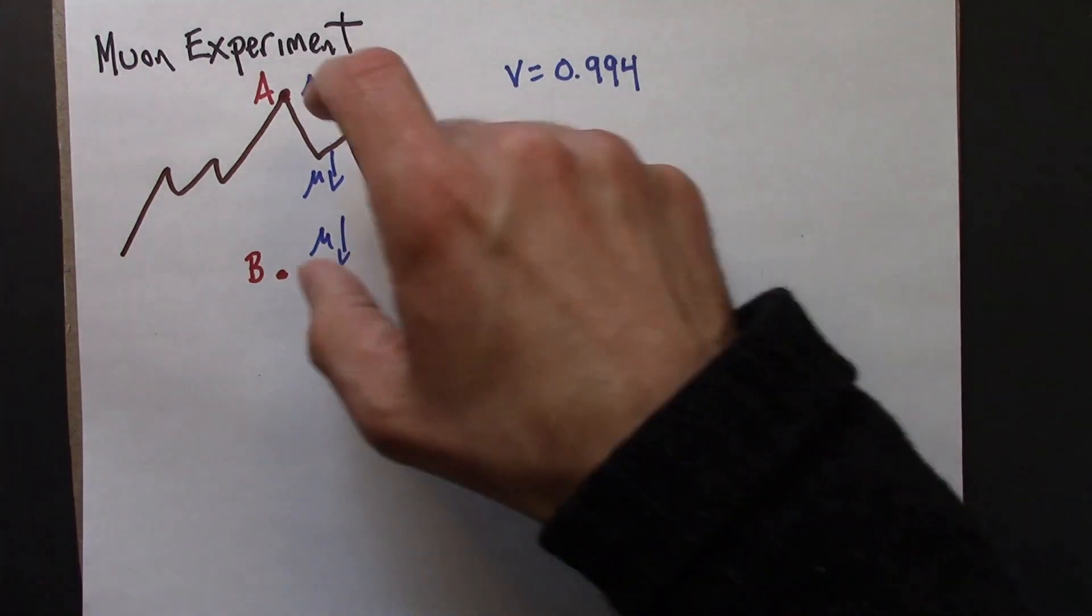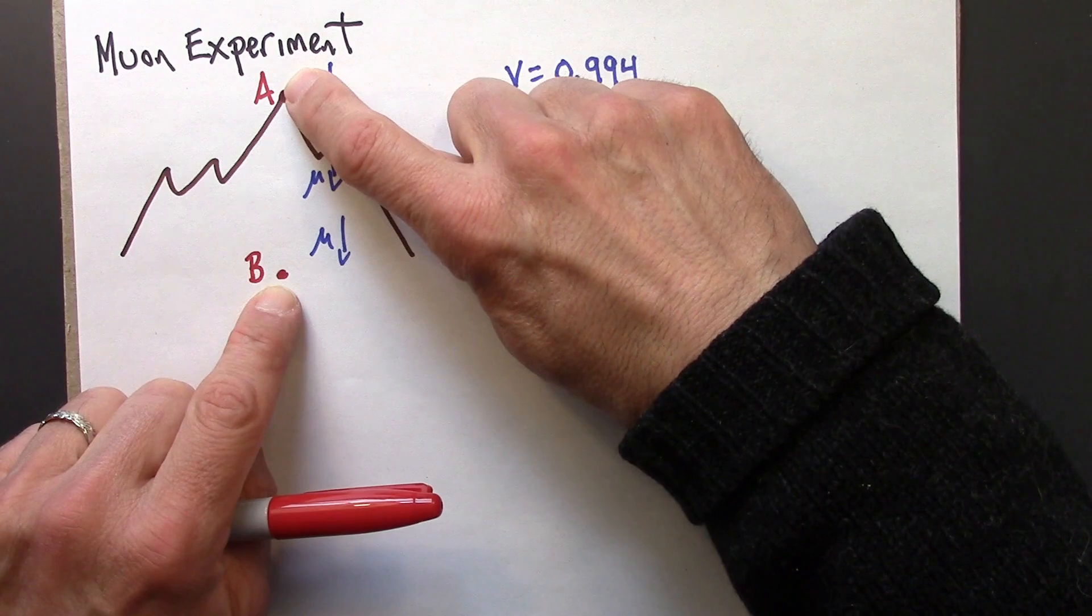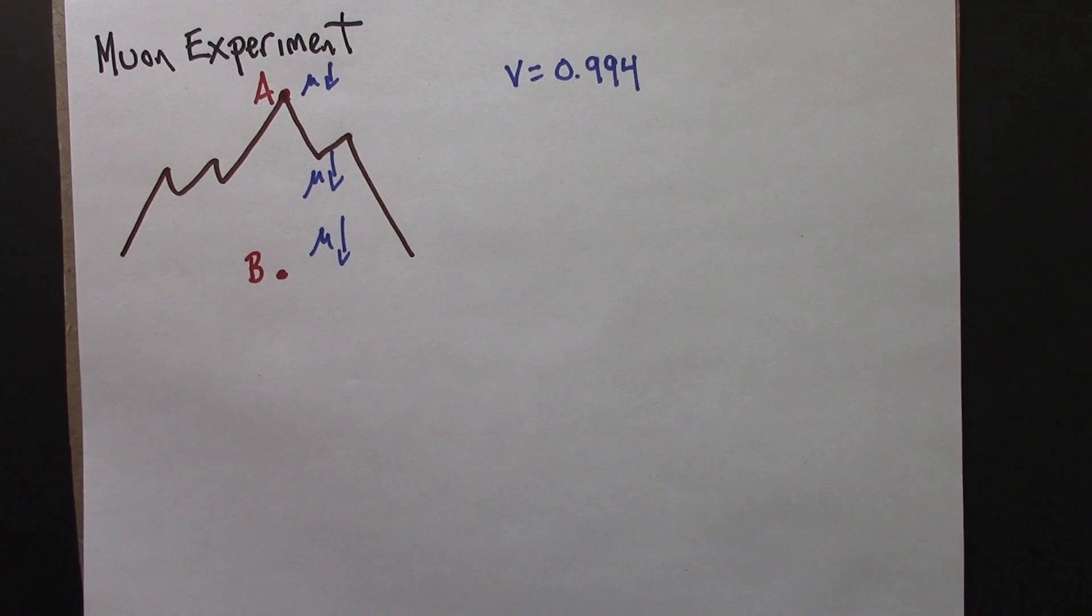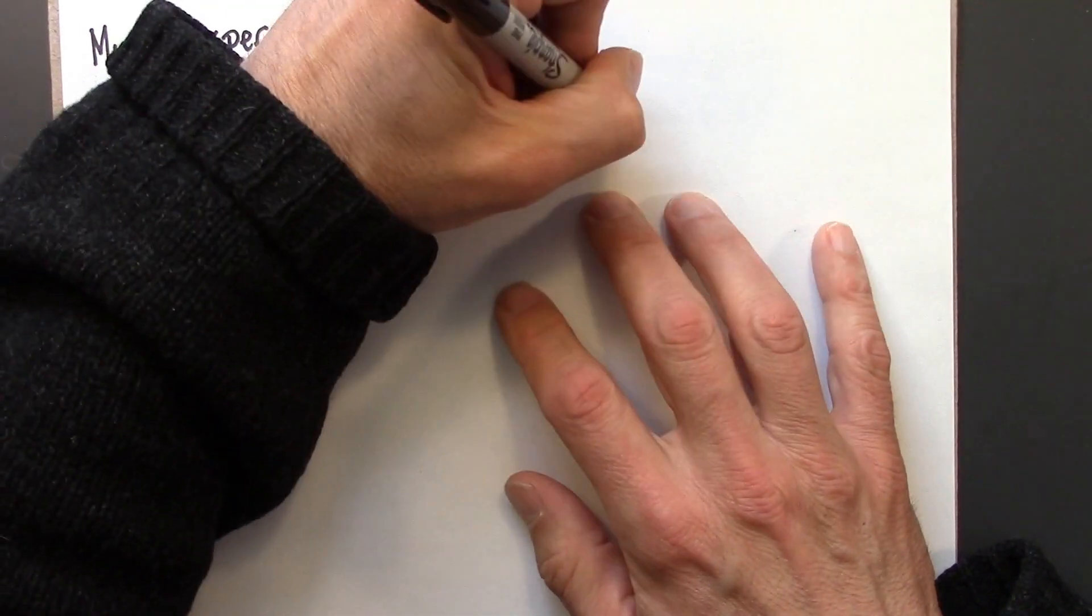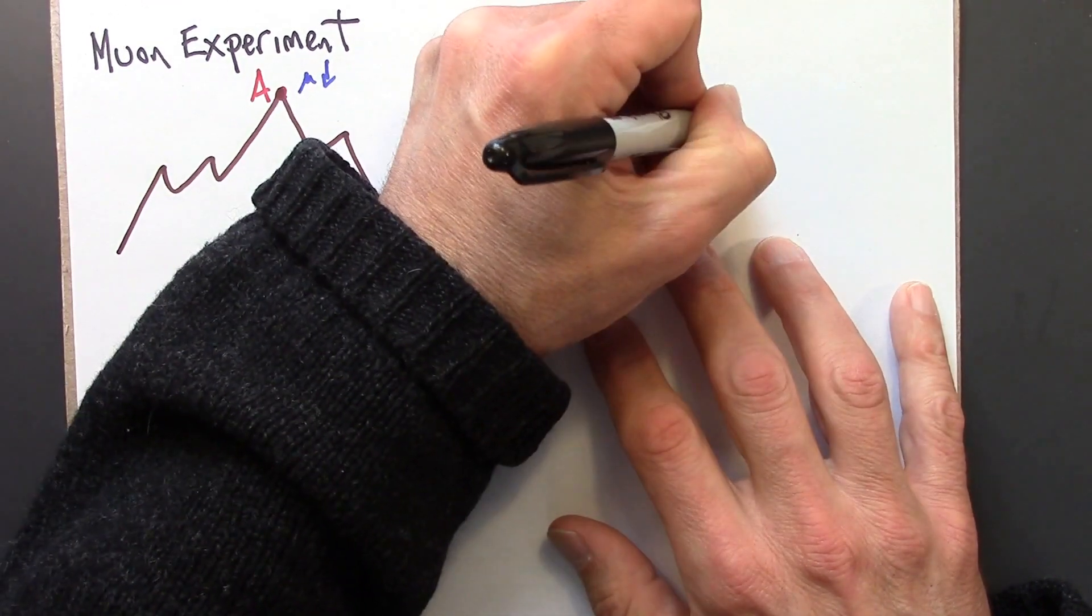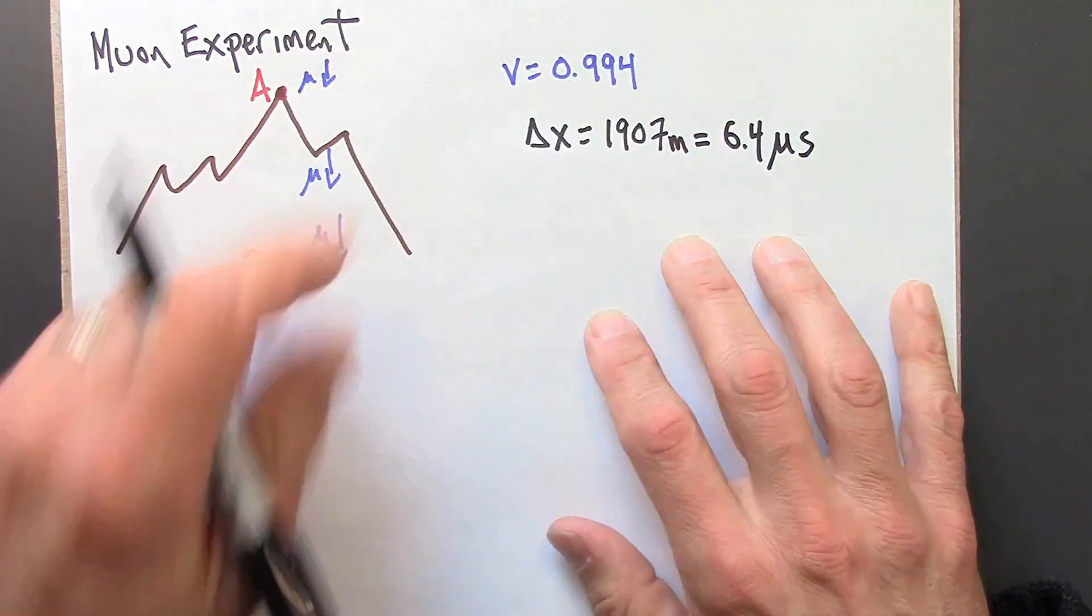Which is 1,907 meters. You converted that into special relativity units and should have found about 6.4 microseconds. So delta x, which is 1907 meters, is about 6.4 microseconds.